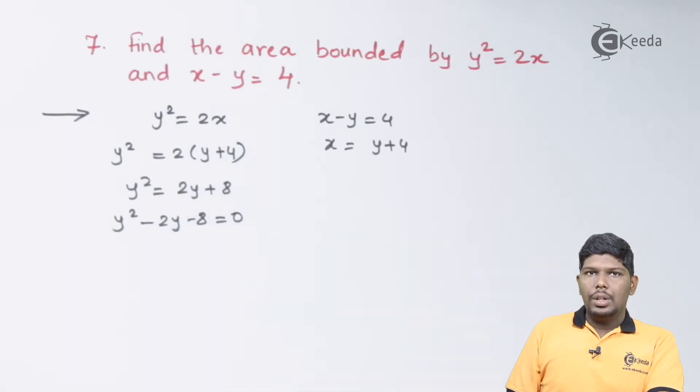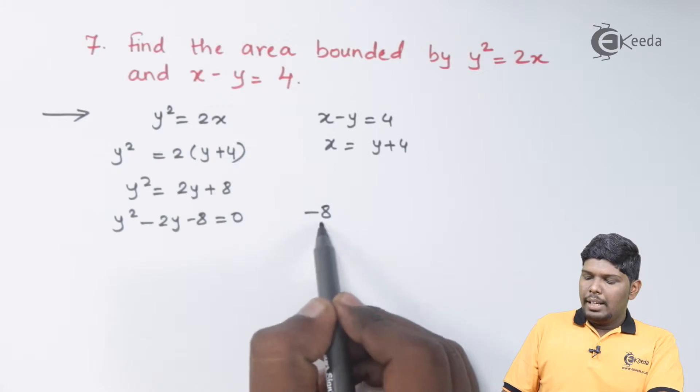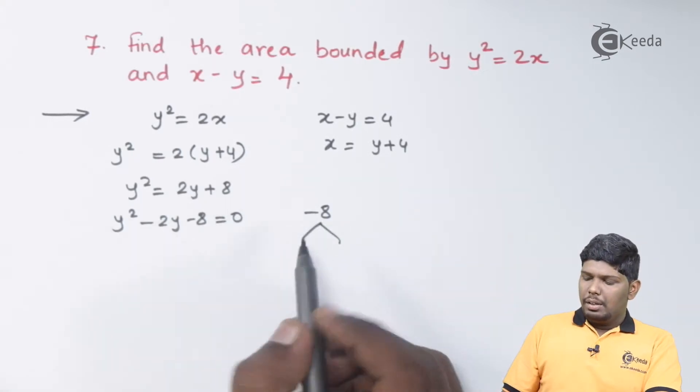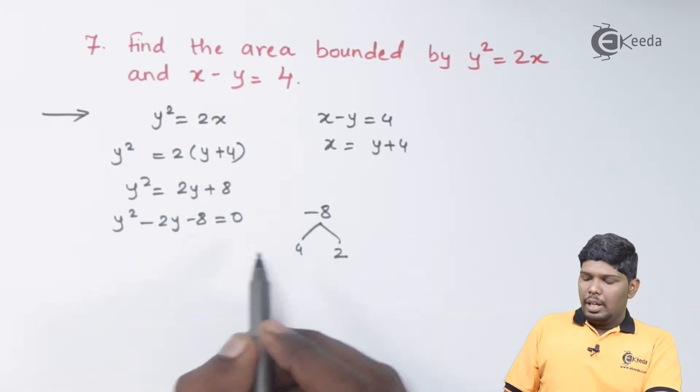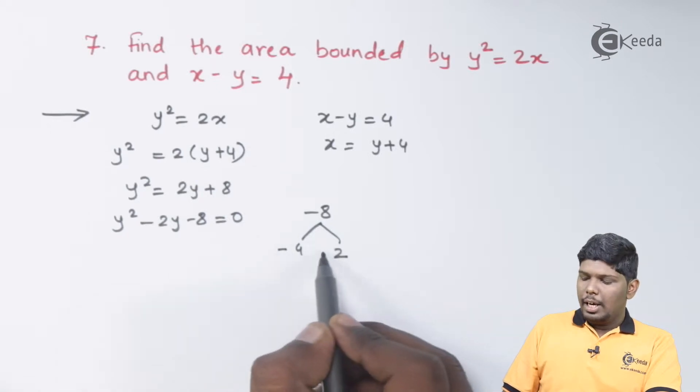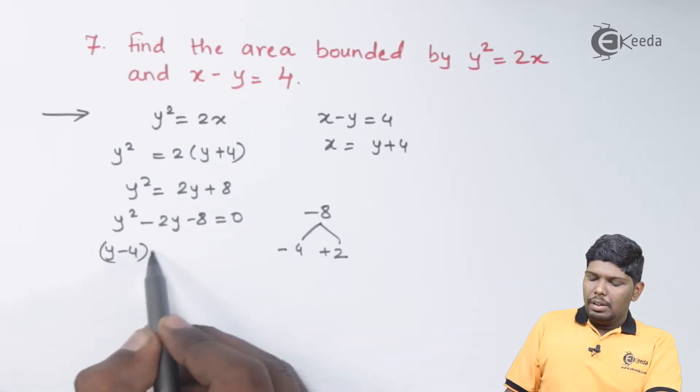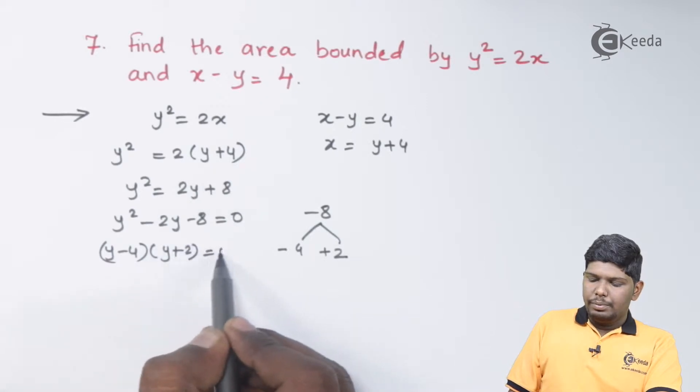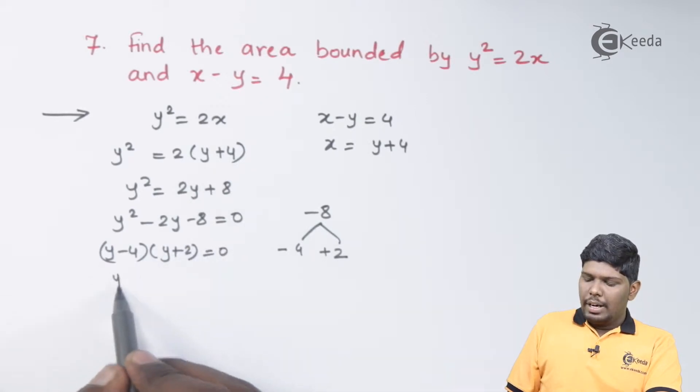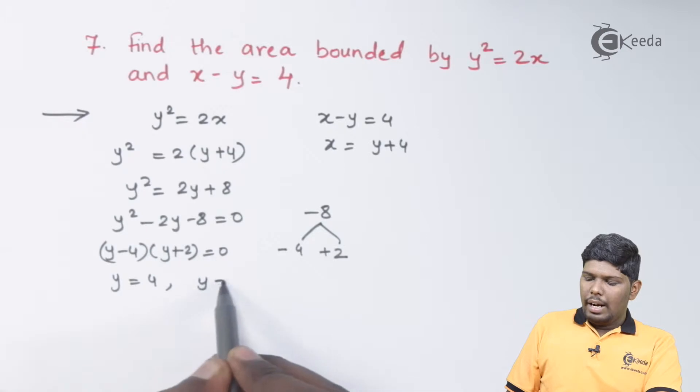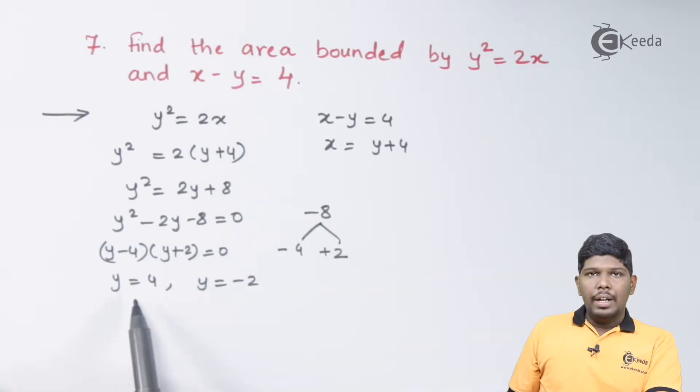As this is a quadratic equation, we have -8 and the two factors will be 4 and 2 with 4 as negative sign and 2 as positive sign. So we have (y - 4)(y + 2) which on solving gives y = 4 and y = -2.